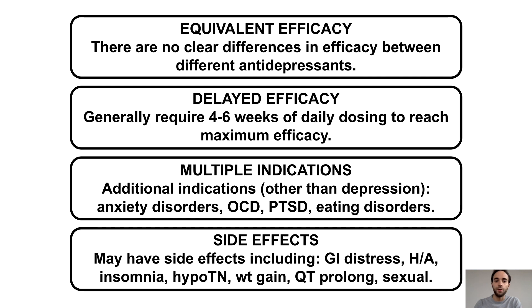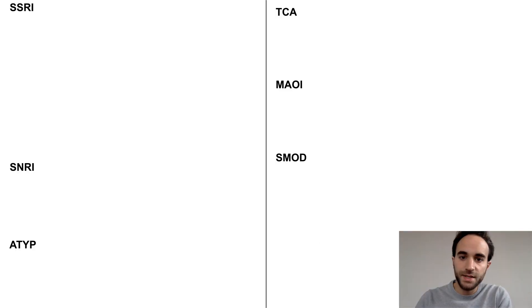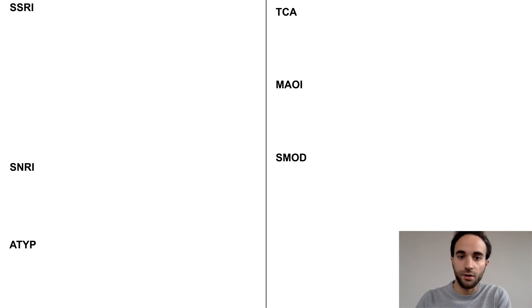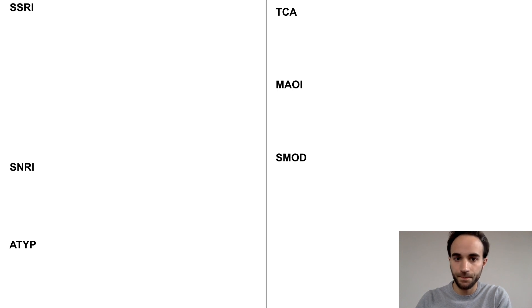Now let's discuss the key differences between antidepressants to help you choose which one to use for a particular patient. The classes of antidepressants include SSRIs, SNRIs, atypicals, tricyclics, MAOIs, and serotonin modulators.